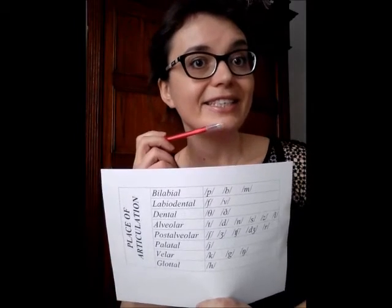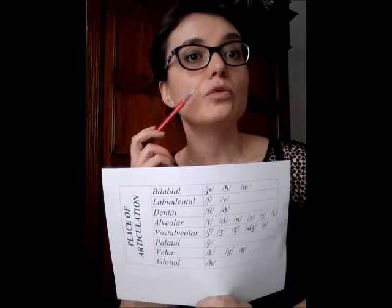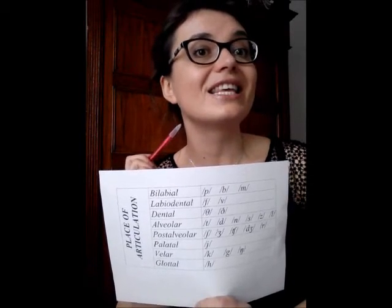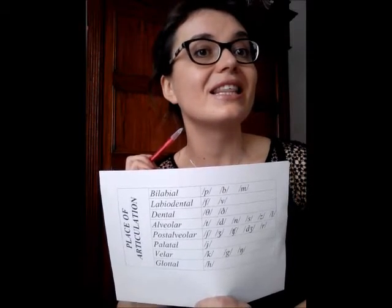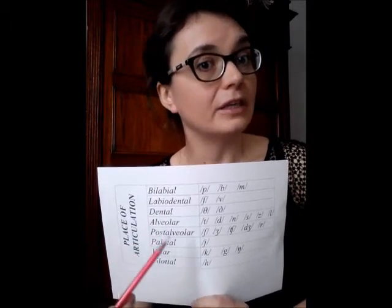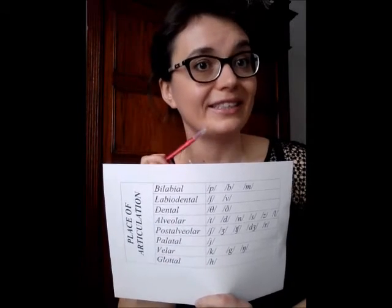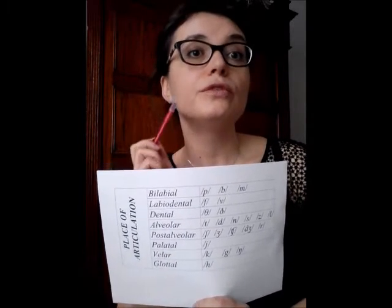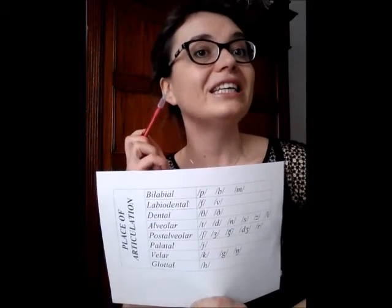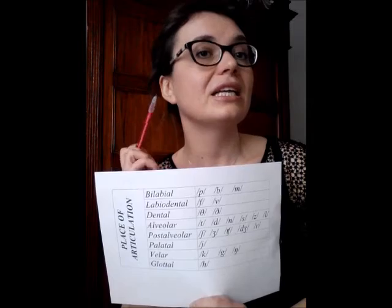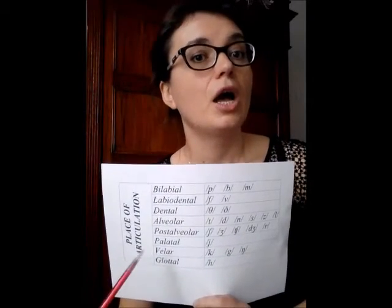Dental: the tongue tip moves towards the upper front teeth. Alveolar: the tongue tip moves towards the alveolar ridge, and we have T, D, N, S, Z, L.